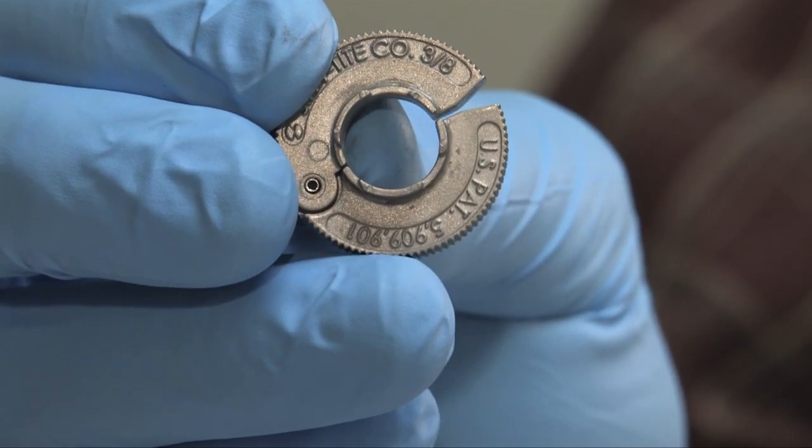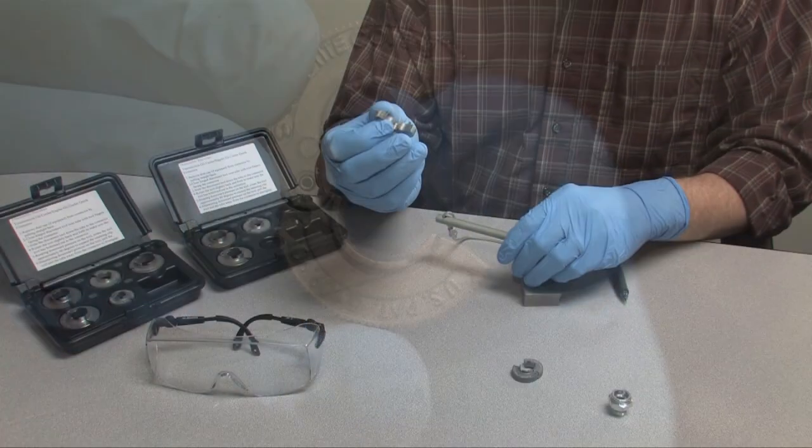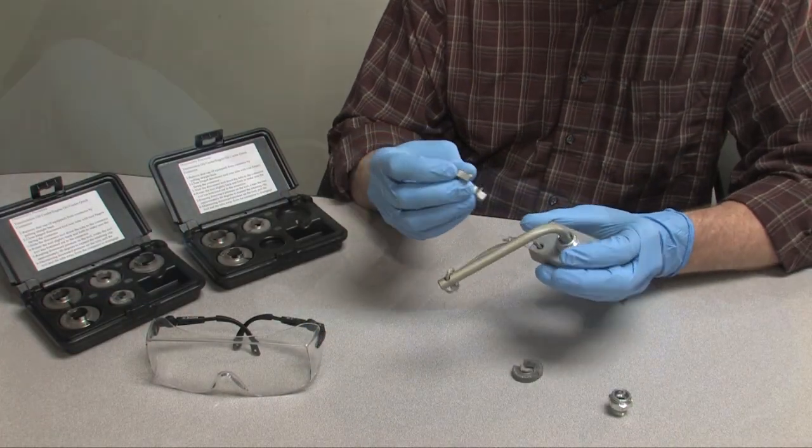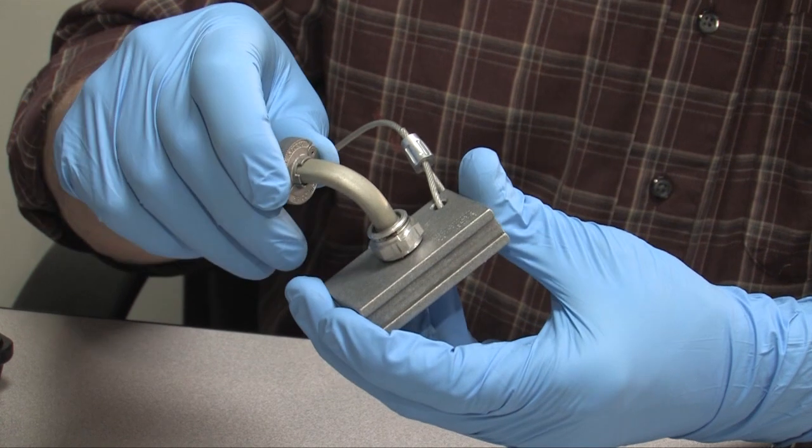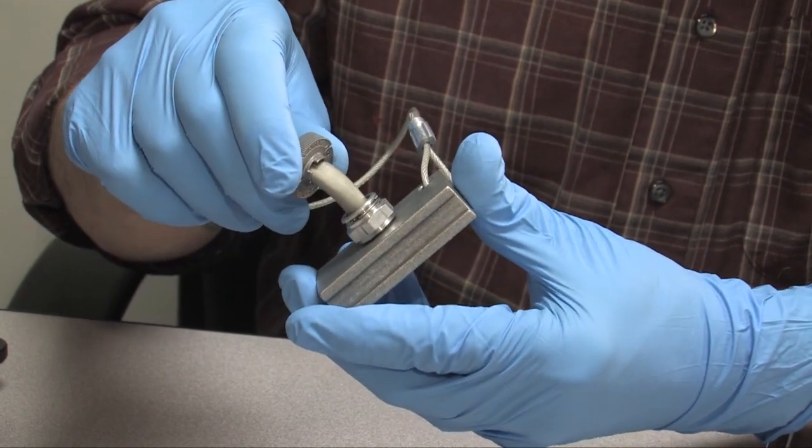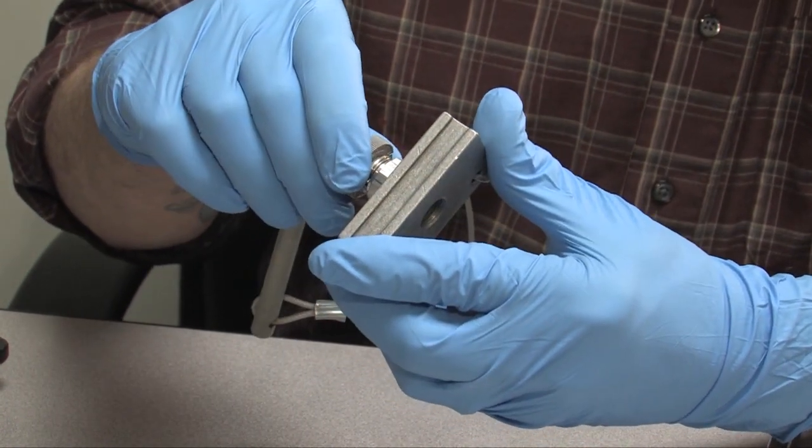Here's how the Jiffy-Tite tool works. The hinge opens up and goes around the tube with the fingers facing the fitting. Then you just slide the tool as far as it will go into the fitting and twist it until you feel it mesh.